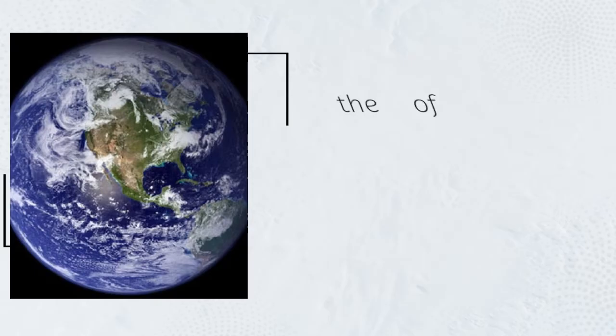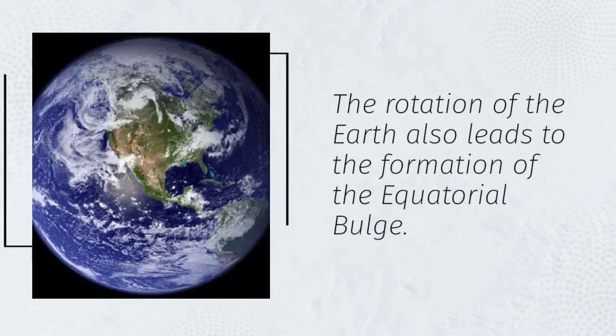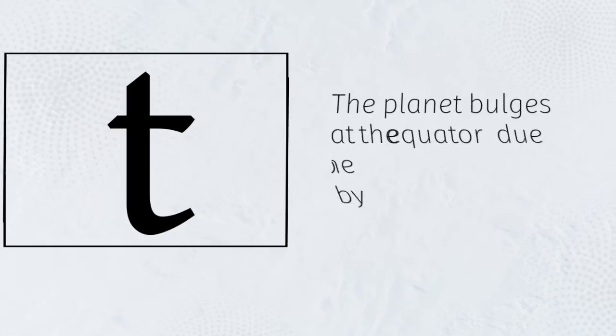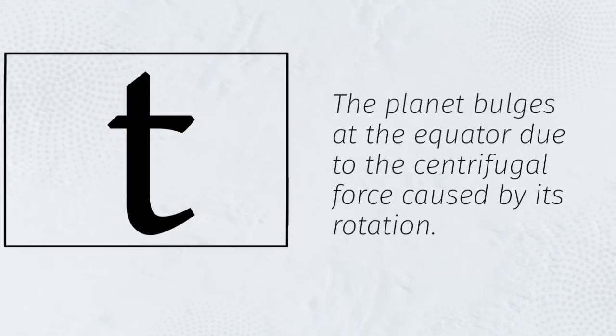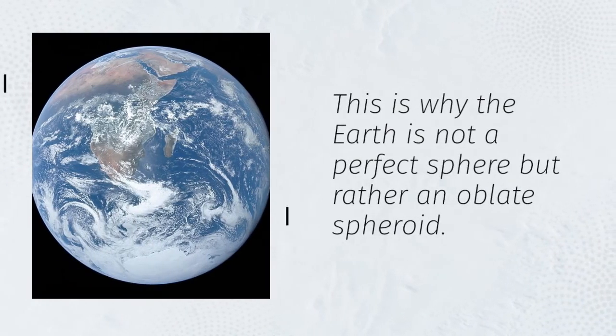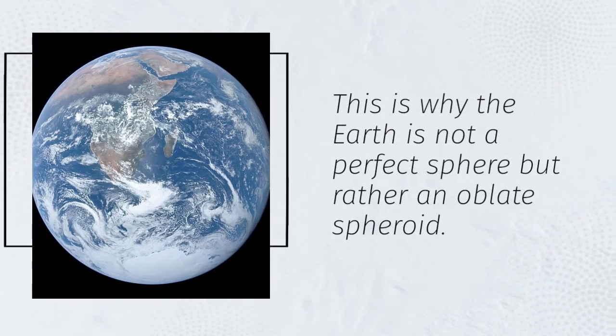The rotation of the Earth also leads to the formation of the equatorial bulge. The planet bulges at the equator due to the centrifugal force caused by its rotation. This is why the Earth is not a perfect sphere, but rather an oblate spheroid.